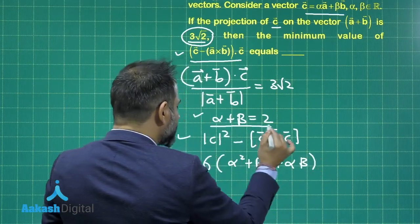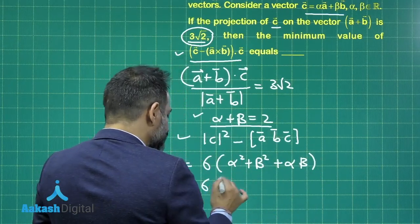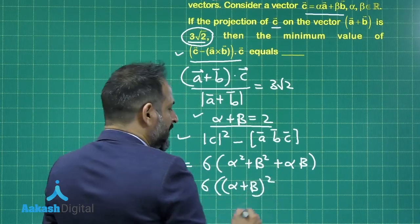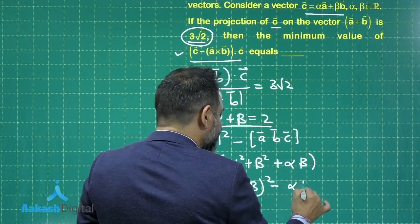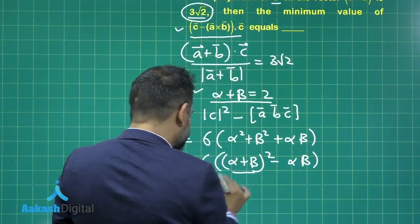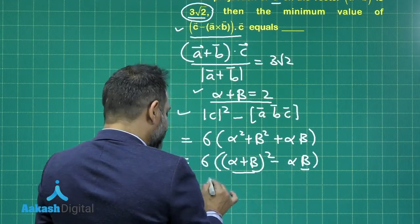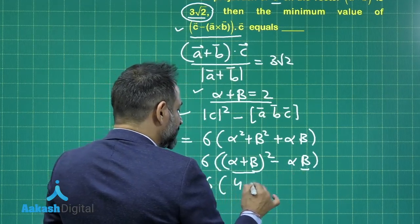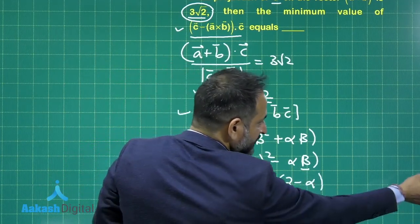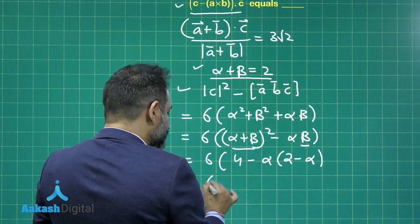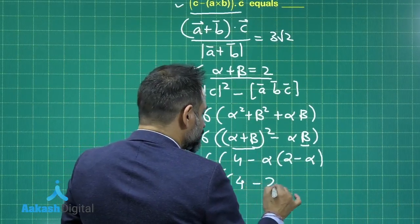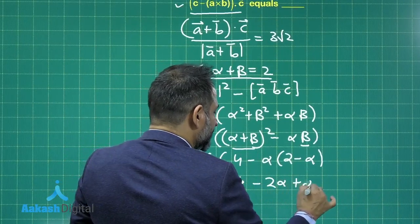Now alpha beta is known to us, the sum is known to us, we can write this as alpha plus beta whole square minus alpha beta and again writing alpha beta here and replacing beta here, we will get this value in terms of single variable. So you can notice, this will be equal to 6 times 4 minus 2 alpha plus alpha square.